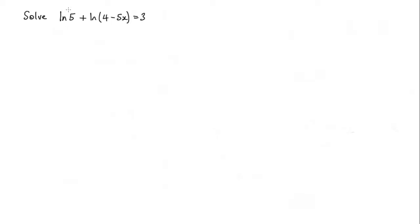In this question we're going to solve the following equation here. On the left hand side we've got two natural log terms. When we're adding natural log terms we can actually rewrite this as the log of 5 multiplied by 4 minus 5x, and that is equal to 3.